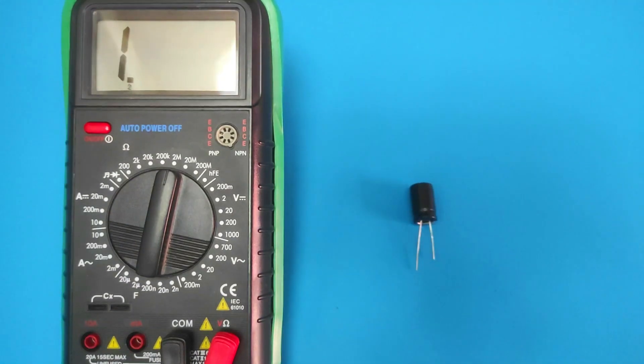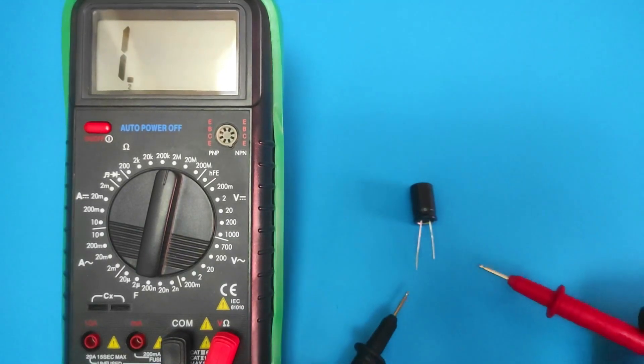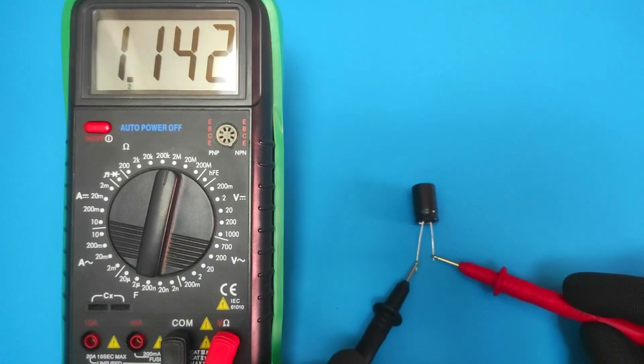Now place the probes of the multimeter on the capacitor. With a good capacitor, the multimeter shows a value close to zero, then this value progressively rises till it gets up to infinity. The resistance test is good.